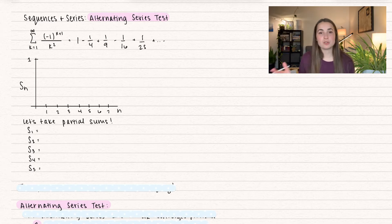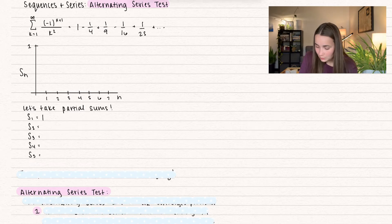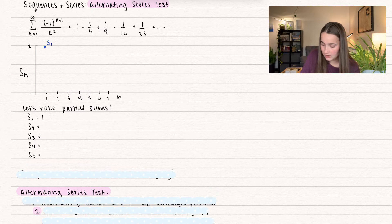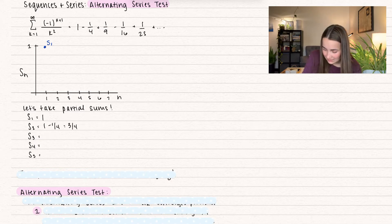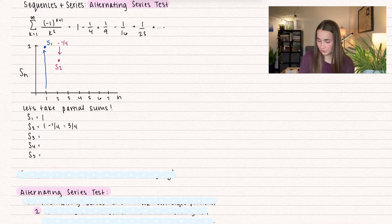That's going to be 1 minus 1/4 plus 1/9 minus 1/16 plus 1/25, and that's going to go on forever. Let's think about this in terms of partial sums because we want to know if this converges or diverges. The first partial sum is just the first term, equal to 1 — that's S₁. The second partial sum is 1 minus 1/4, which equals 3/4, so we decrease to S₂.